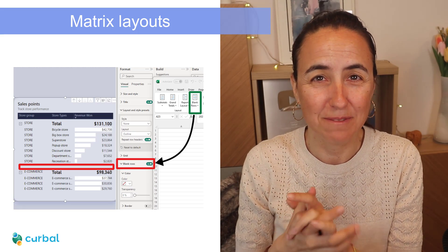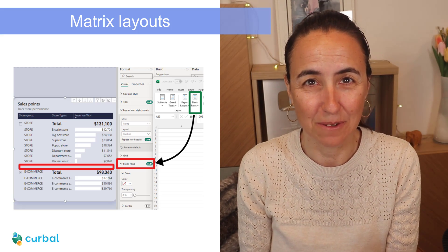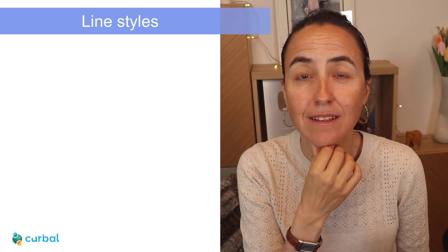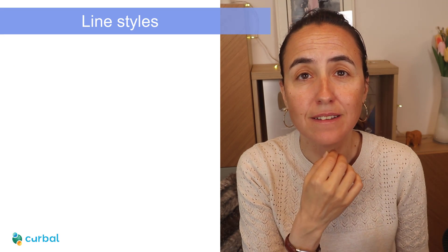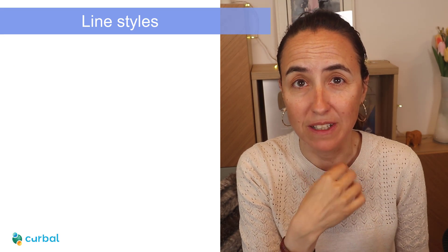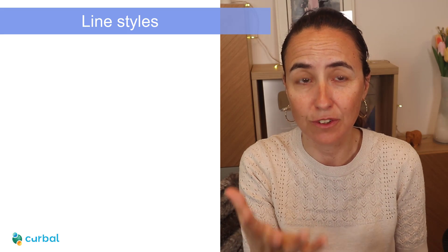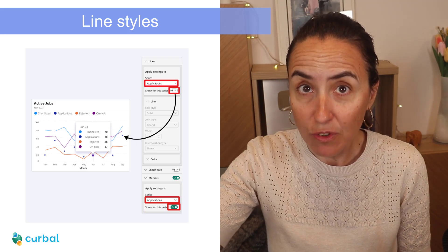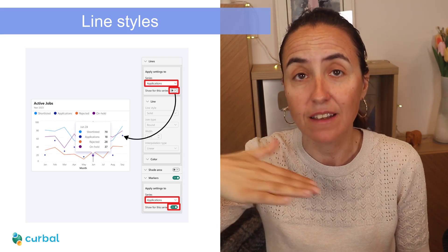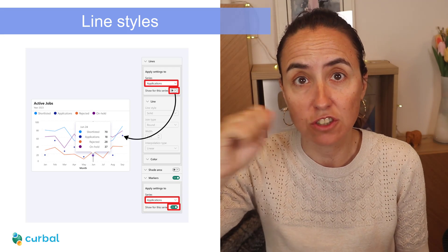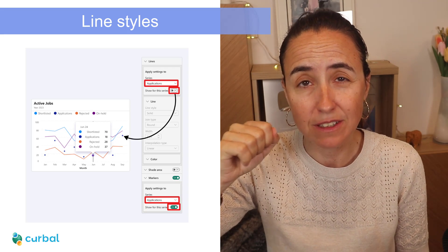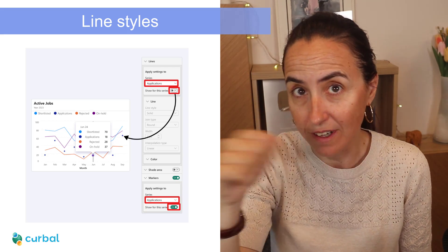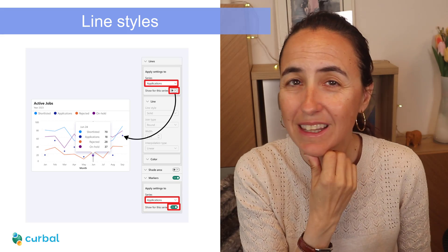We had to do Power Query tricks before, but now we don't need to. The blog doesn't do a very good job explaining the new line style capabilities, so let's go through them. Before, if you wanted to hide a line, you had to toggle the visibility — you don't need to do that now; you can just show and hide.